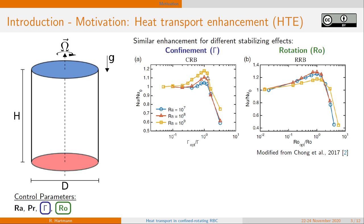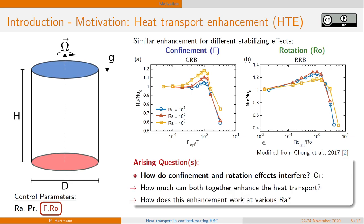And recently, Chong and I have shown that also for confinement such an intermediate regime exists where the heat transport is enhanced. Our goal now is to investigate how these two, confinement and rotation, together may interfere and affect the heat transport.